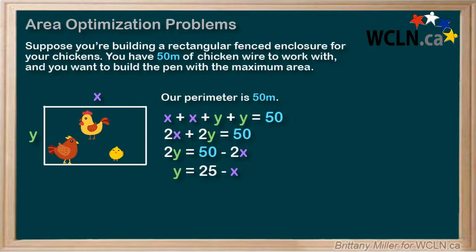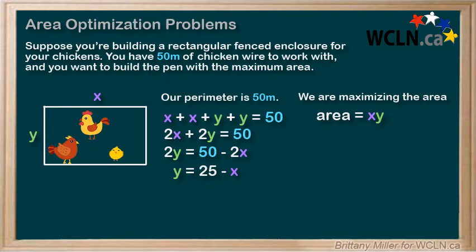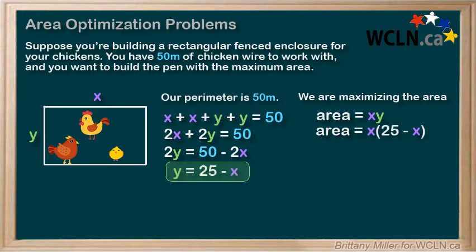Step 4: What are we maximizing? We're maximizing the area, which is going to be x times y. So A equals xy. We don't know x or y individually, but we do know that y equals 25 minus x. So let's substitute that in. Now we have area equals x times (25 minus x).